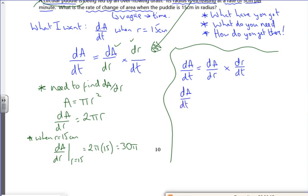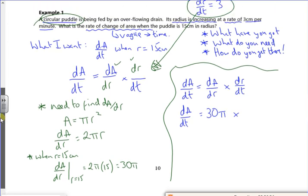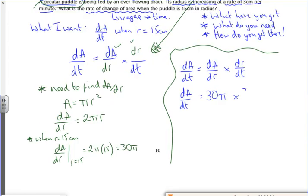So dA/dt is 30π times by, now it said dr/dt was 3, didn't it? Yeah. 3. So dA/dt is 90π there. And I'm going to leave it as 90π.